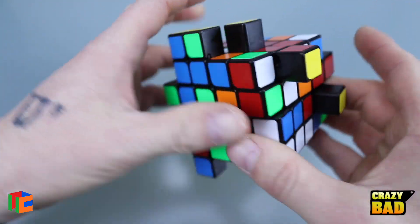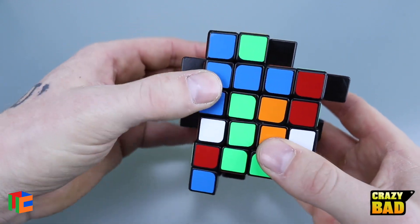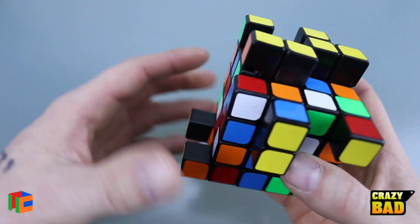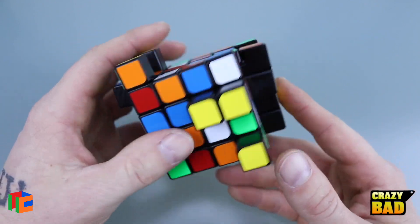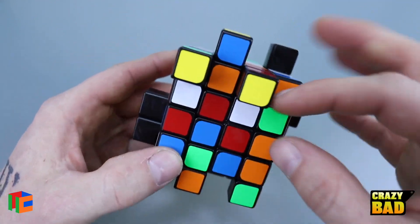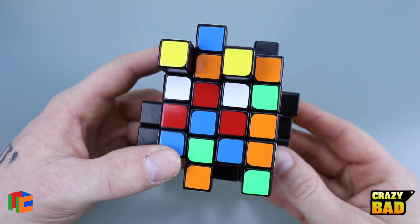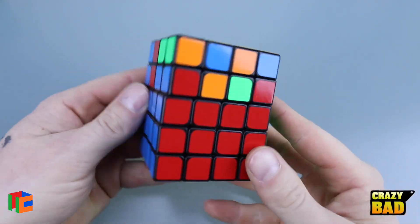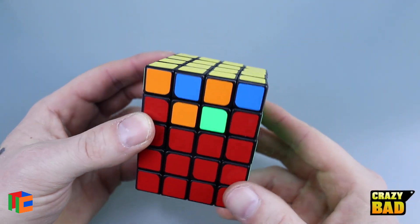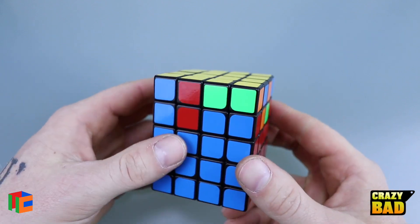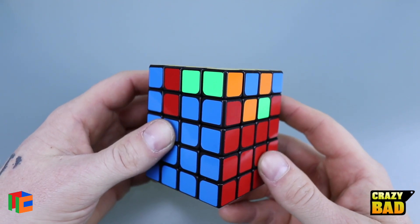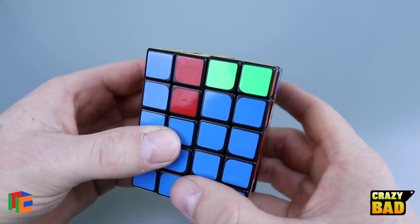All right, so I'm going to call that a scrambled Crazy Bad 4x4x6. So I'm going to go and solve it. It's too long of a solve to put in this video, so I'm going to go and solve it up to the point of the last two layers and then I'll come back and show you what I was talking about. All right, so this is basically what it looks like and now the challenge is to do the top two layers as one.